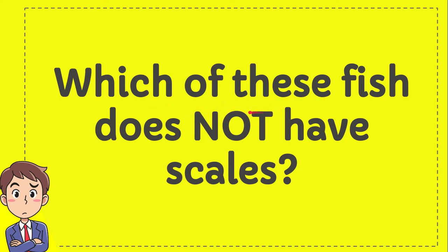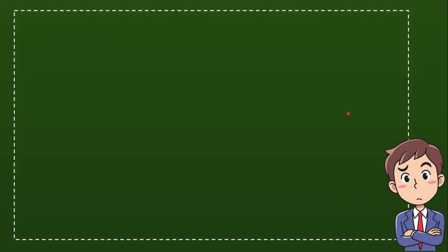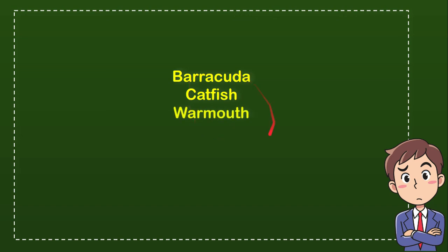Which of these fish doesn't have scales? I'll give you three options, and you try to guess which one is the answer. Here is the list of options: the first option is barracuda, the second option is catfish, and the last option is warmouth.